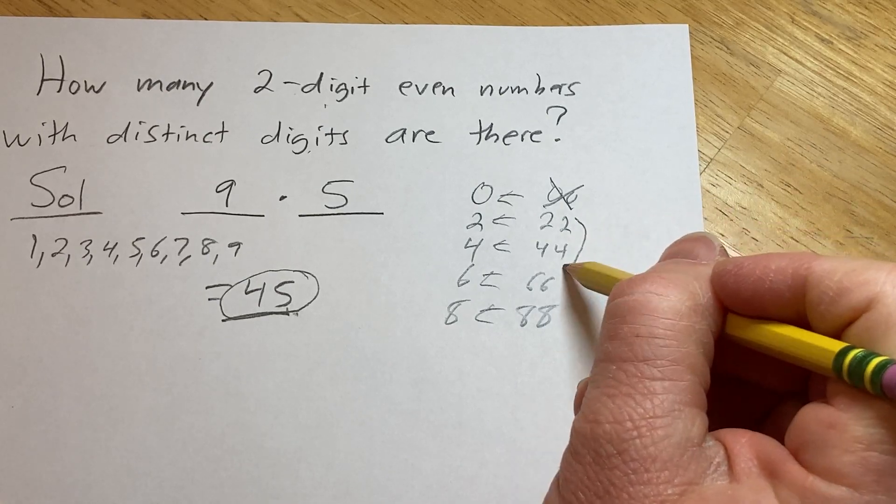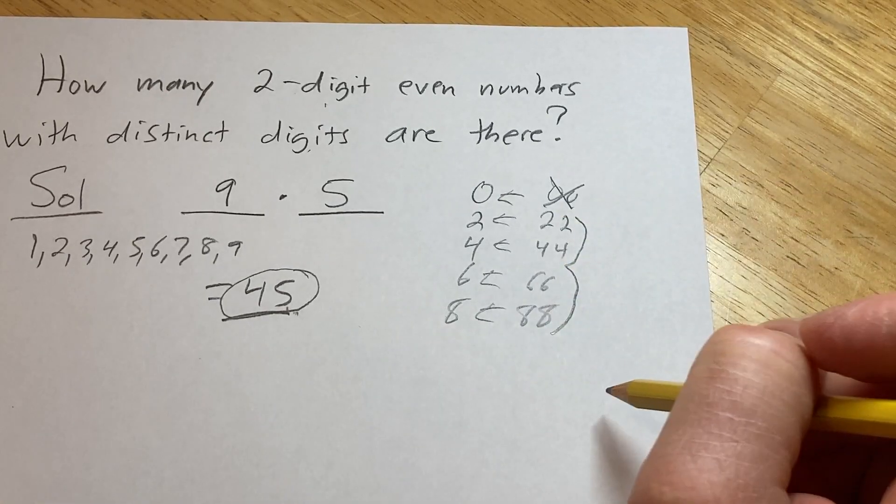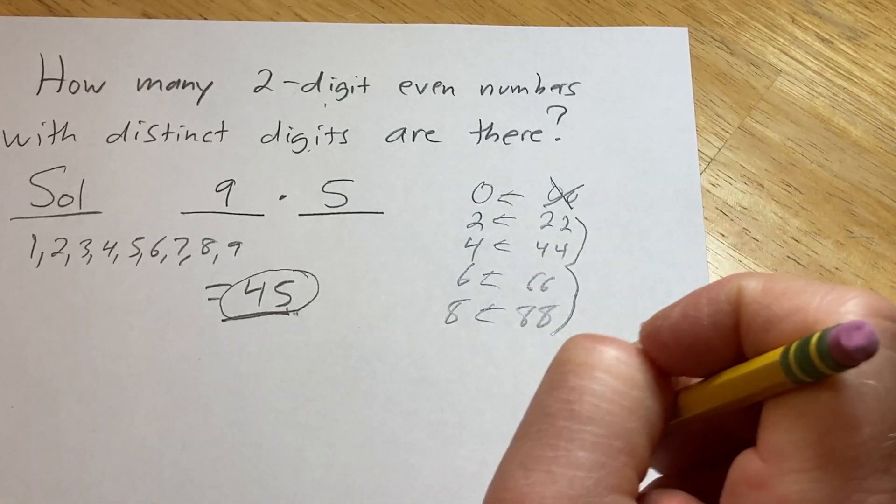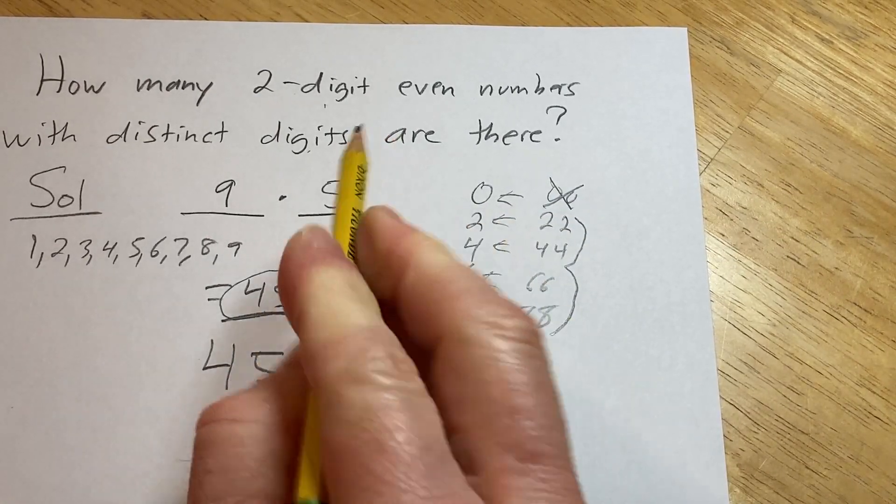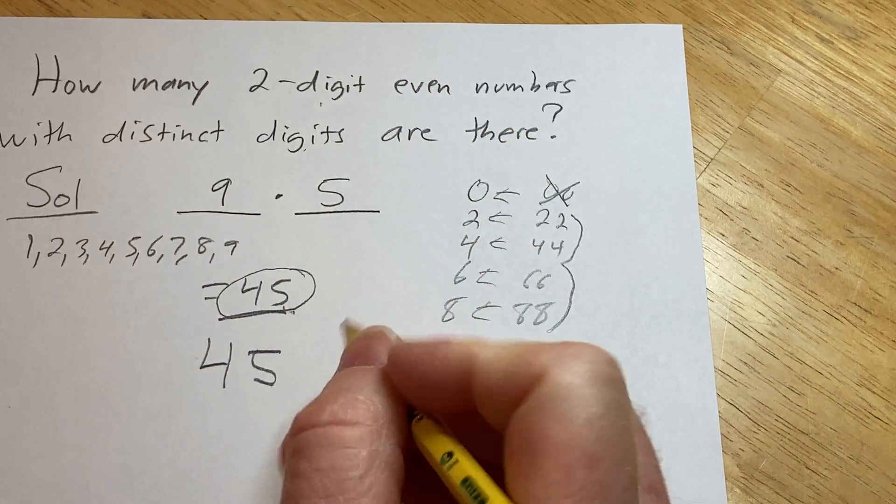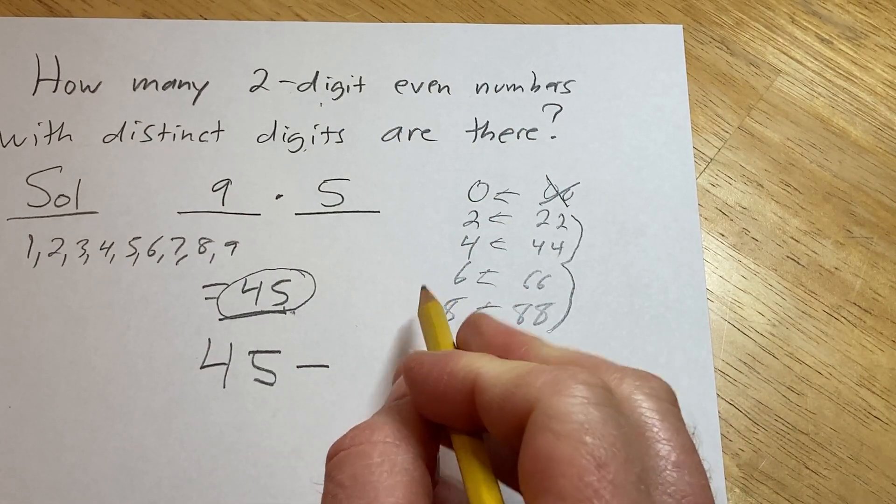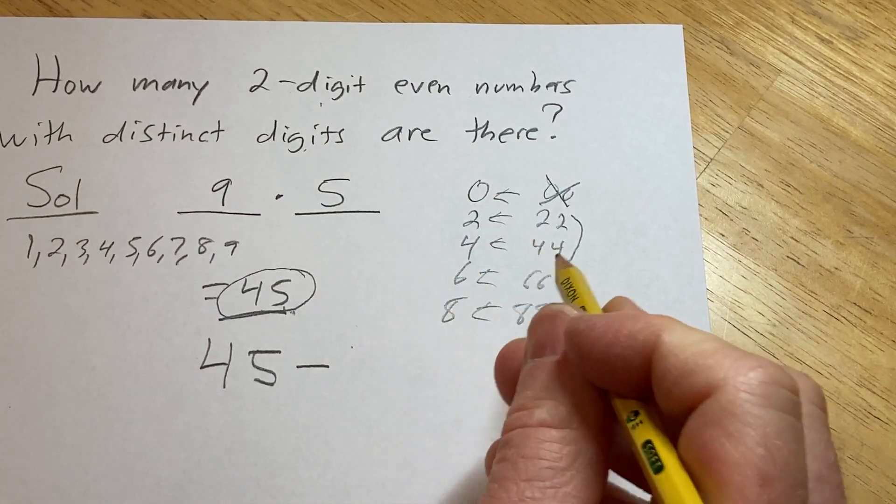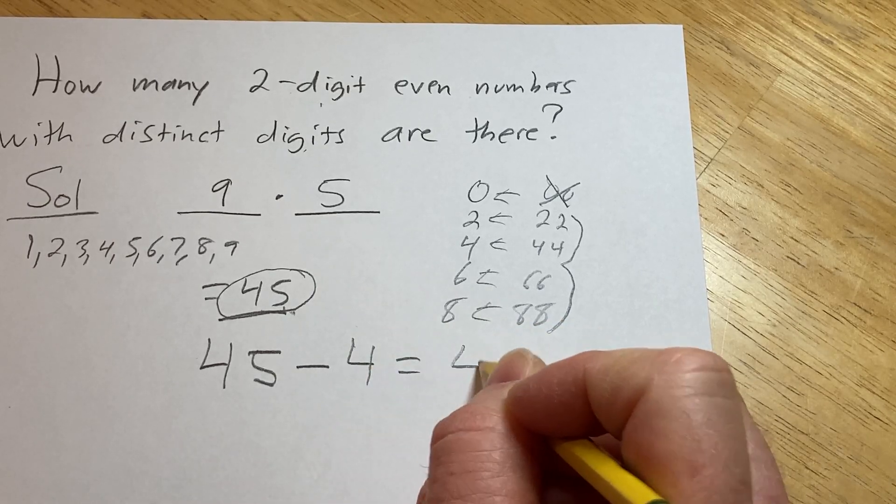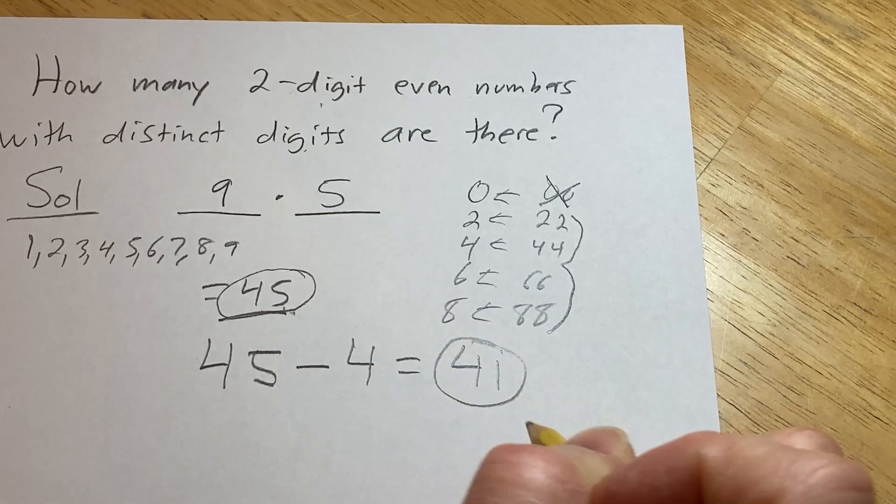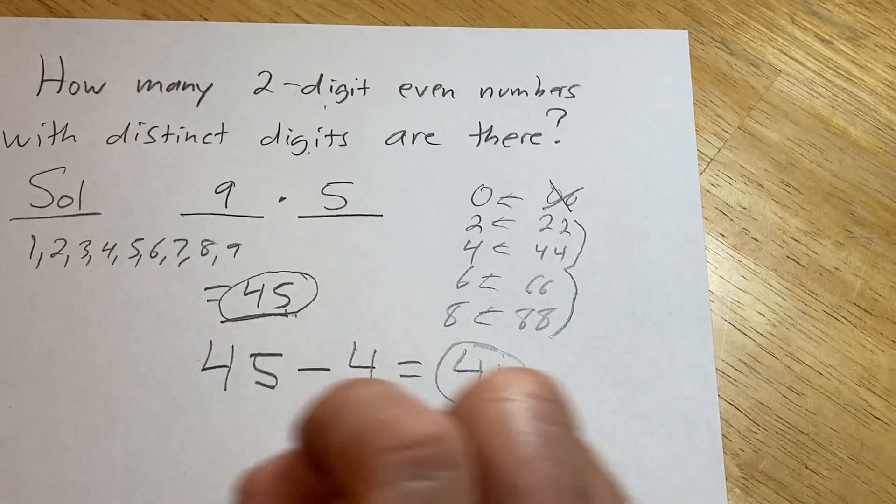So there are four two-digit even numbers that don't have distinct digits. So we take the total number of two-digit even numbers, and we subtract the number of two-digit even numbers that don't have distinct digits. That leaves us with 41 two-digit even numbers that have distinct digits.